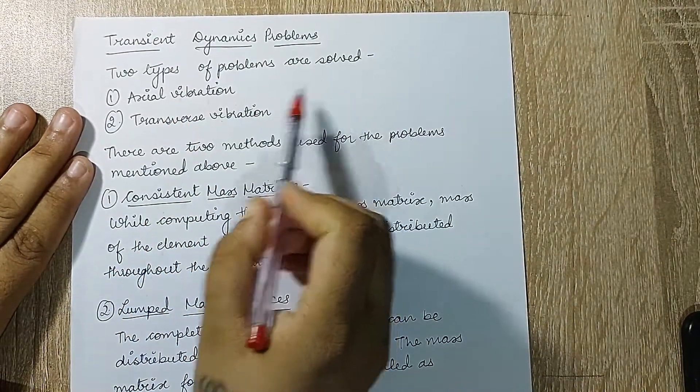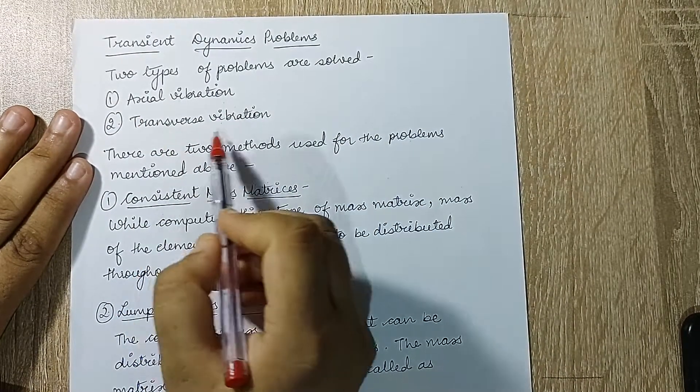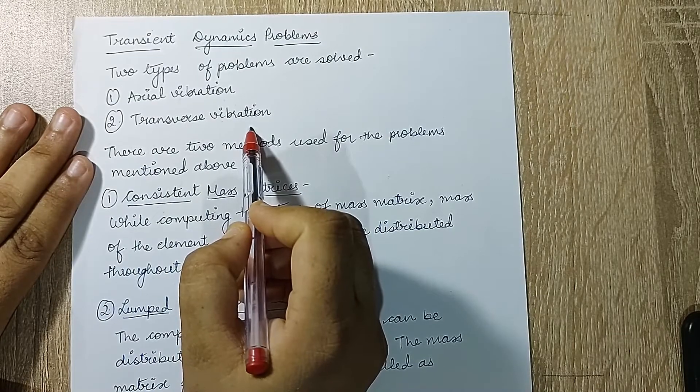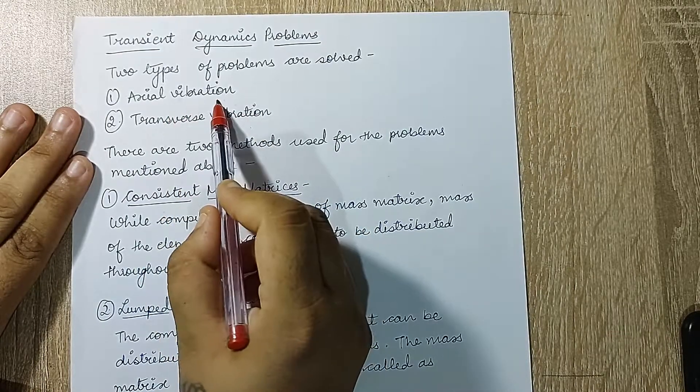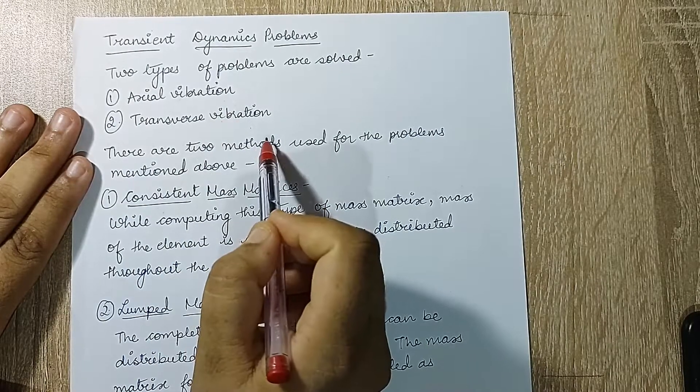Two types of problems are going to be solved in this topic. One is on axial vibration and the other is on transverse vibration. Axial vibration will be along the axis of the body and transverse means the direction which is perpendicular to the axis of the body.